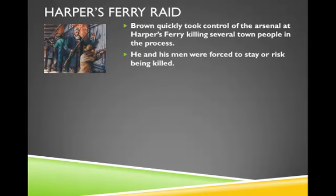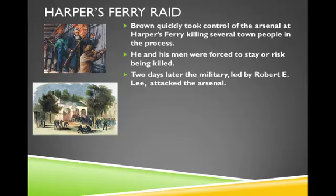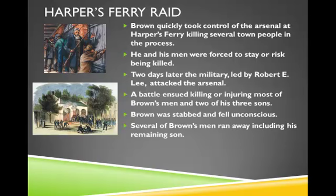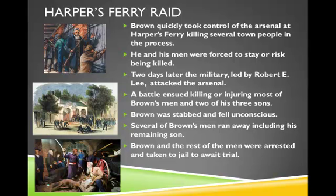While they were stuck there, the military sent in Robert E. Lee to attack and retake the arsenal and arrest John Brown. Once Lee attacked, a battle ensued, killing most of Brown's men, including two of his sons. Brown himself was stabbed and fell unconscious and was quickly subdued. Several of Brown's men were fortunate enough to run away, one of those being Brown's remaining son. Brown and the rest of the men were arrested and taken to jail to await trial.